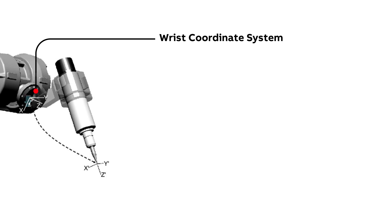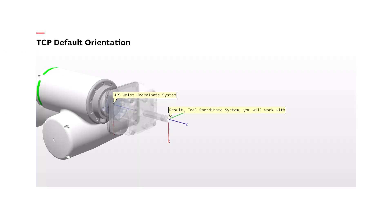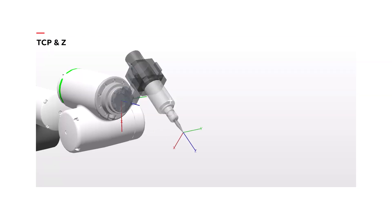The origin of a tool coordinate system is called TCP — tool center point. Let's continue with how to recognize what kind of tool is being used. For TCP default orientation, we don't need to mind other orientations relative to TCP since the wrist coordinate system is located directly at the flange. As you can see, there is no orientation at all.